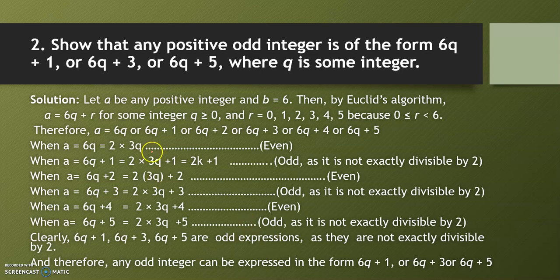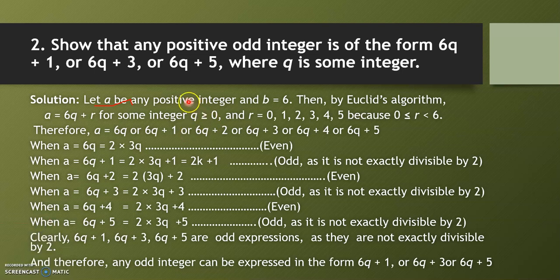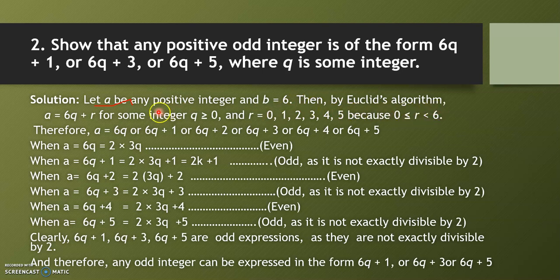Let's use Euclid's division lemma for this. Let a be any positive integer. We take b = 6 because in the question, the format to be proved uses 6q + 1, 6q + 3. So by Euclid's algorithm, a = 6q + r.